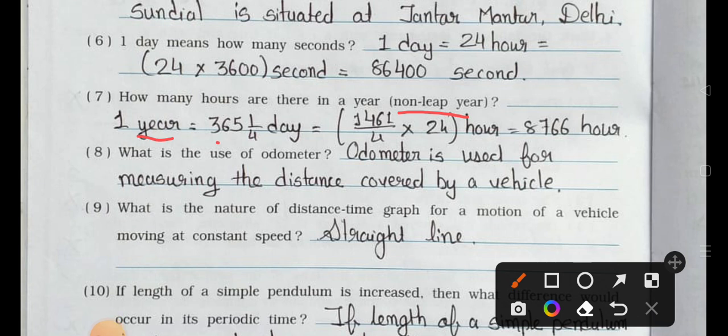Now see question number seven: how many hours are there in a year? Means non-leap year. So one year is equal to 365 and 1/4 days, so is equal to 1461/4 multiply by 24 hours, so is equal to 8,766 hours.